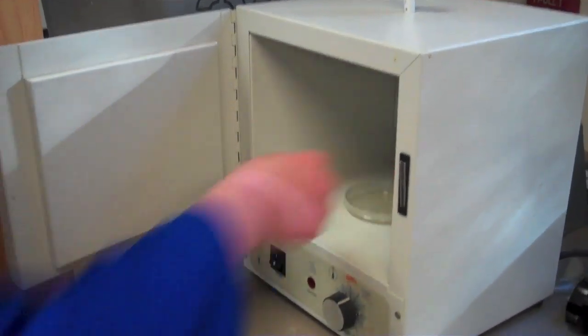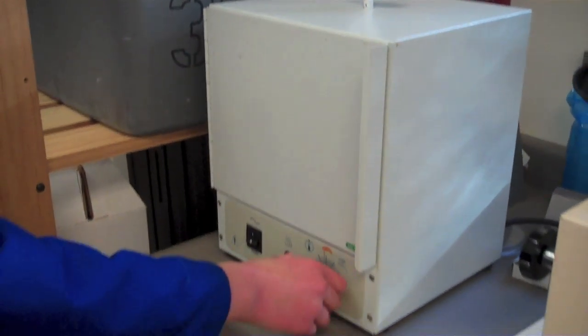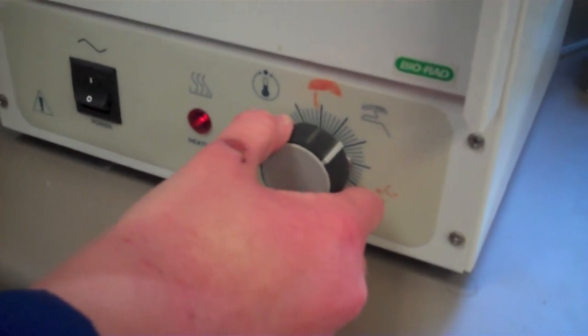Place the petri dish into the incubator for 24 hours. Set the temperature for 35 degrees centigrade.